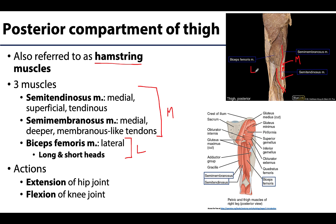On the lateral side there will be the biceps femoris muscle, and as the name biceps might clue you in, there are two heads associated with this muscle. The long head is the one you see best from a more superficial view — right here is your biceps femoris long head, and the long head is more characteristically hamstring-associated. The long head shares characteristics with the other two hamstring muscles, whereas the short head is the exception in terms of not sharing some of those important characteristics, such as proximal attachment and innervation.